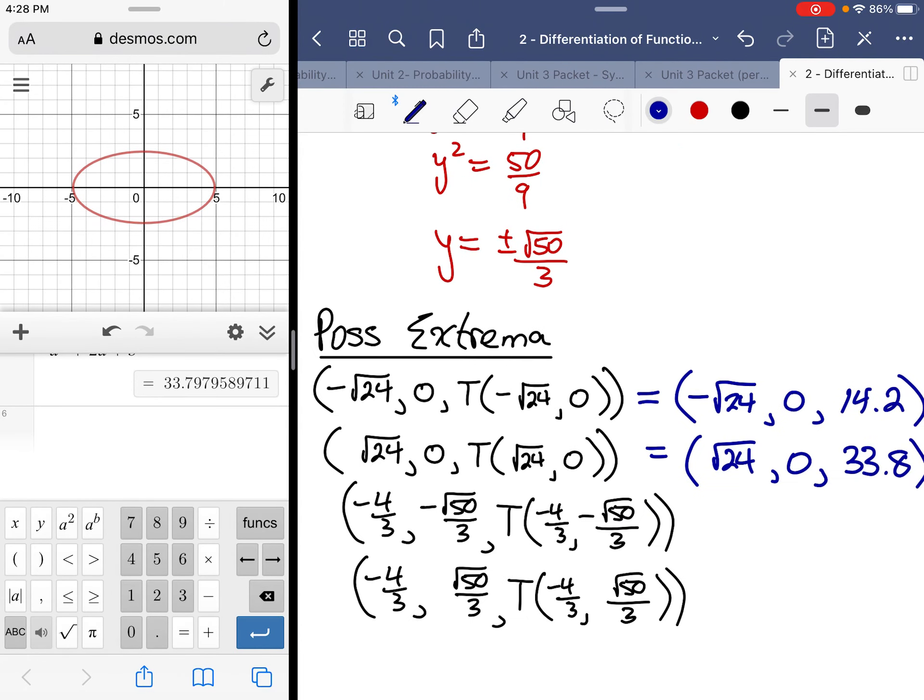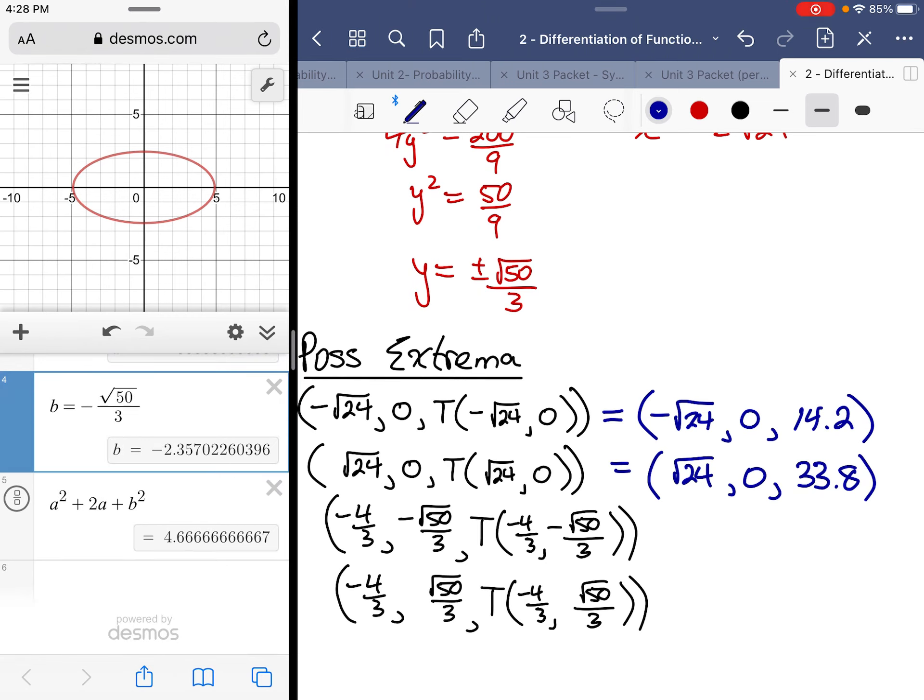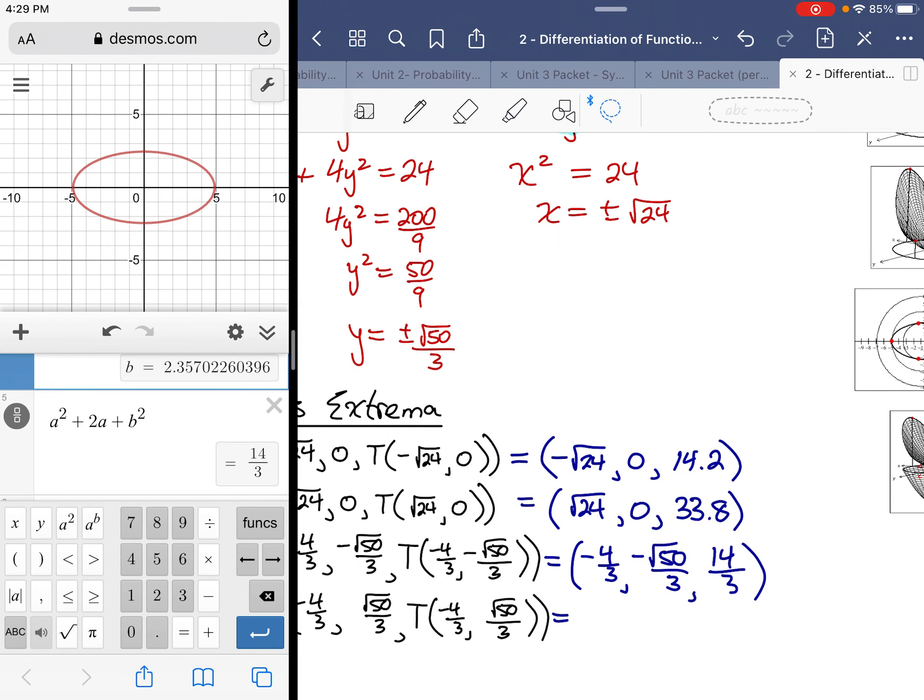What are we looking for again? We're looking for extreme temperatures, the highest or the lowest. So -4/3 for my A value, the B value -√(50/3) corresponds to about, well I can get a fraction, 14/3. So (-4/3, -√(50/3), 14/3). You can put the decimal if you want, we already did it for the other ones. And then popping in a positive for √(50/3), also 14/3. So I'll do a copy-paste job there. So it looks like we have our answer.